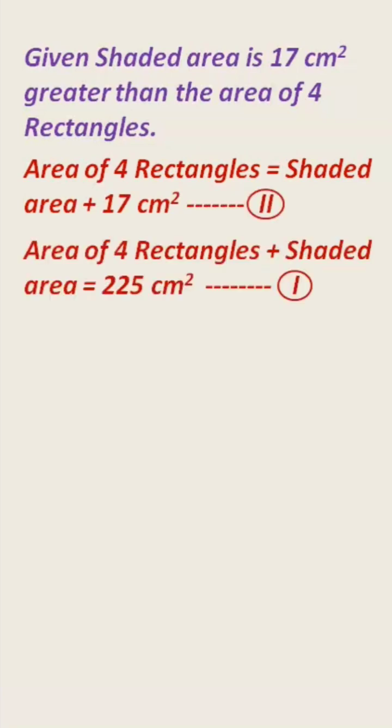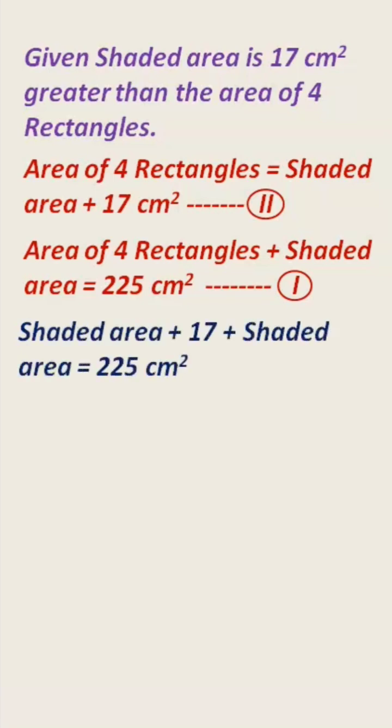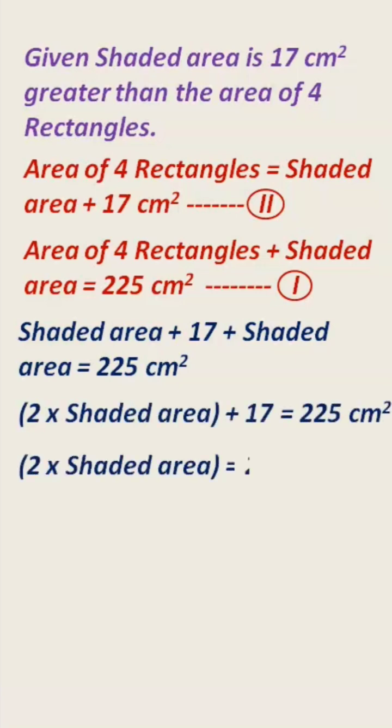Substituting this area of 4 rectangles in equation 1, we get shaded area plus 17 plus shaded area equal to 225. So that means 2 times shaded area plus 17 is 225. Therefore, shaded area is 208 divided by 2, which is 104 cm².